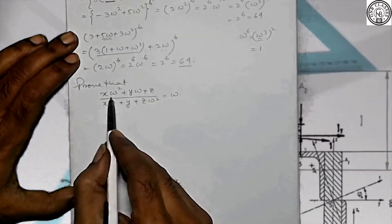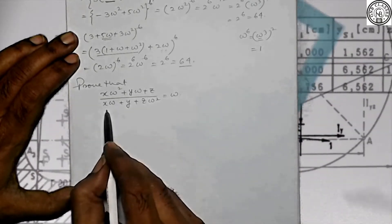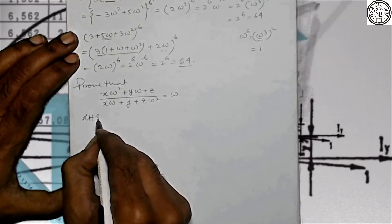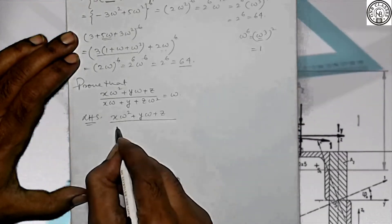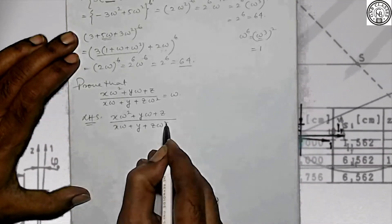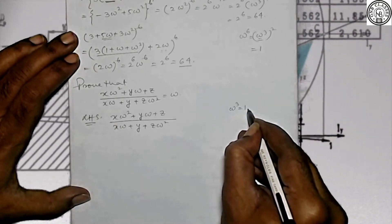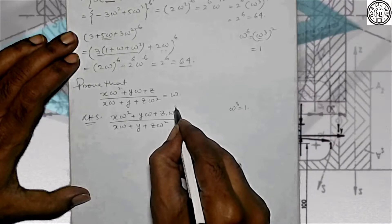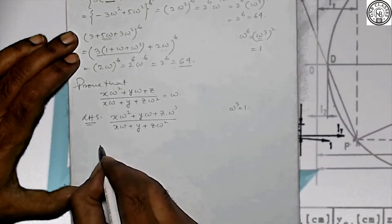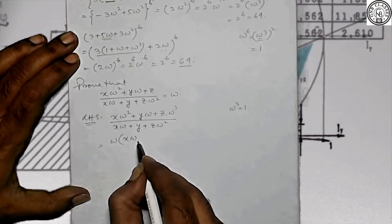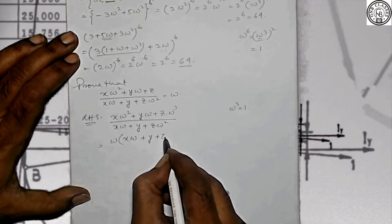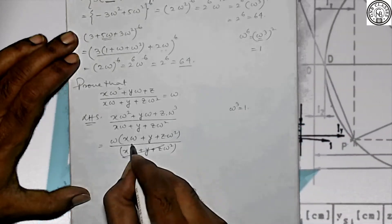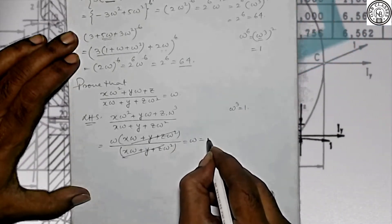Next: Prove that (xω² + yω + z) / (xω + y + zω²) = ω. We start with the left hand side. Taking omega square common from the denominator — it cancels with omega square in the numerator — leaving omega, which is the right hand side. These are all simple sums to build a strong foundation.